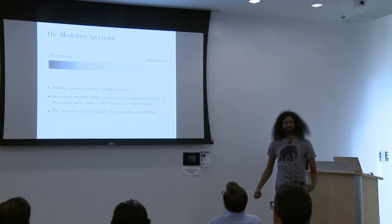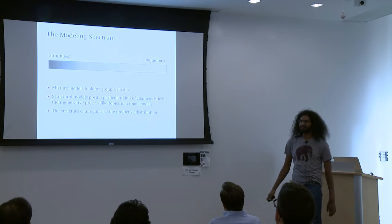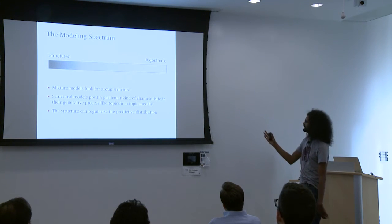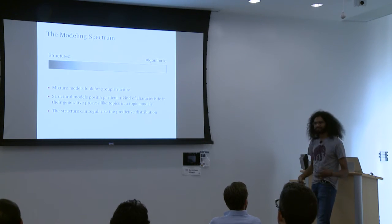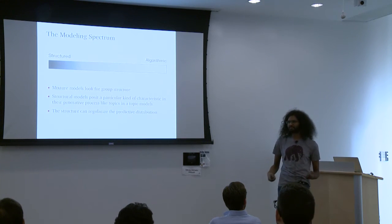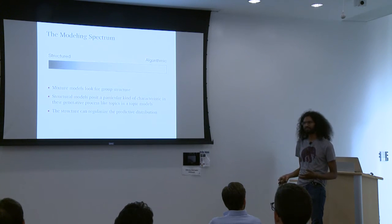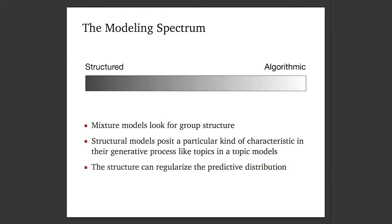The mixture model lives in what I call the modeling spectrum, ranging from structured models to algorithmic ones. The kind of structure mixture models have is grouping structure. More generally, structured models posit some hidden structure that you want to inspect directly — for example, in a topic model, you look at the topics in a document and the topics that exist in the corpus. The structure can also be useful in regularizing the predictive distribution in certain ways.